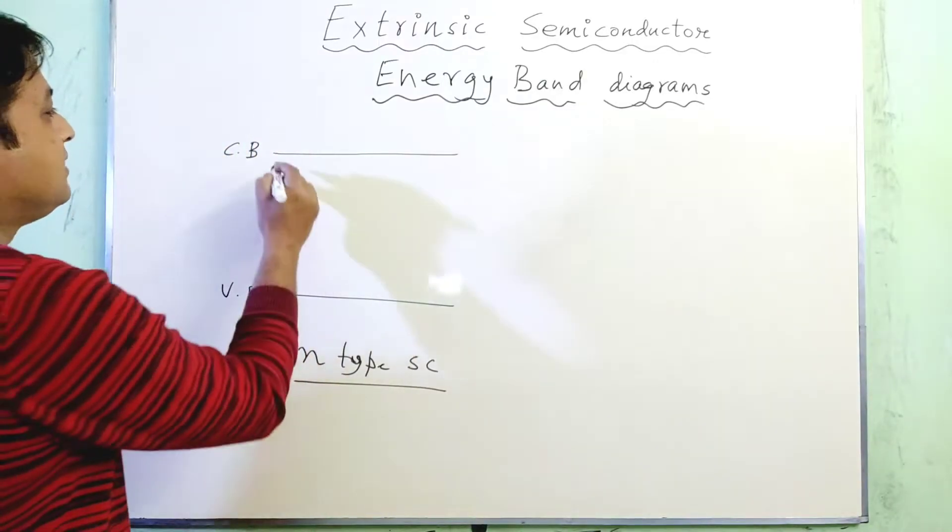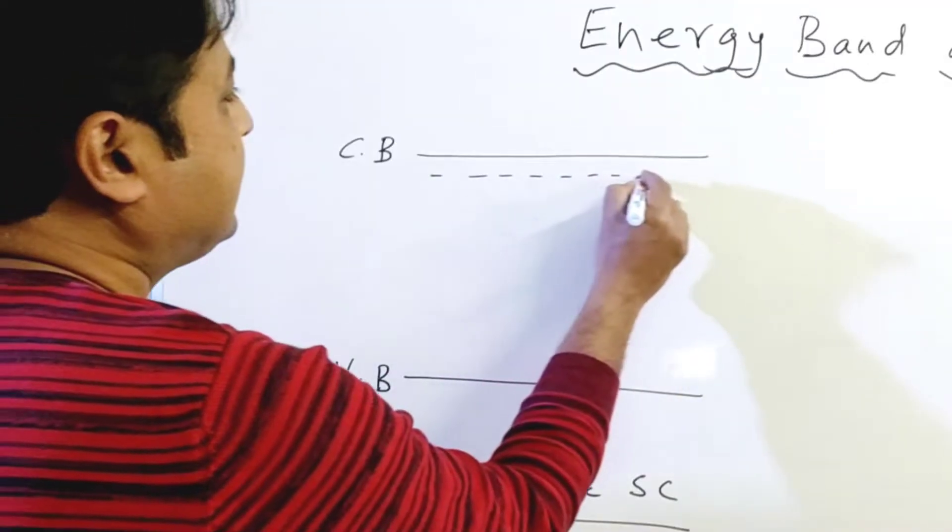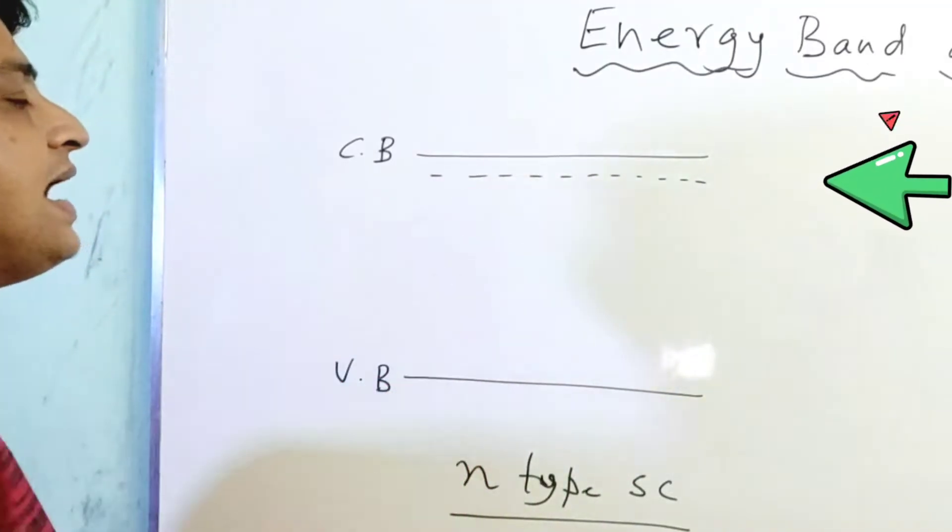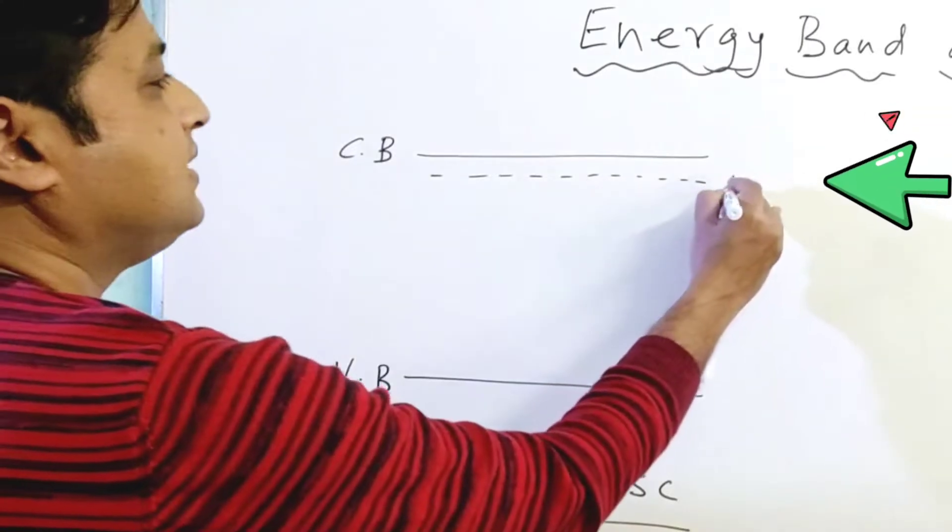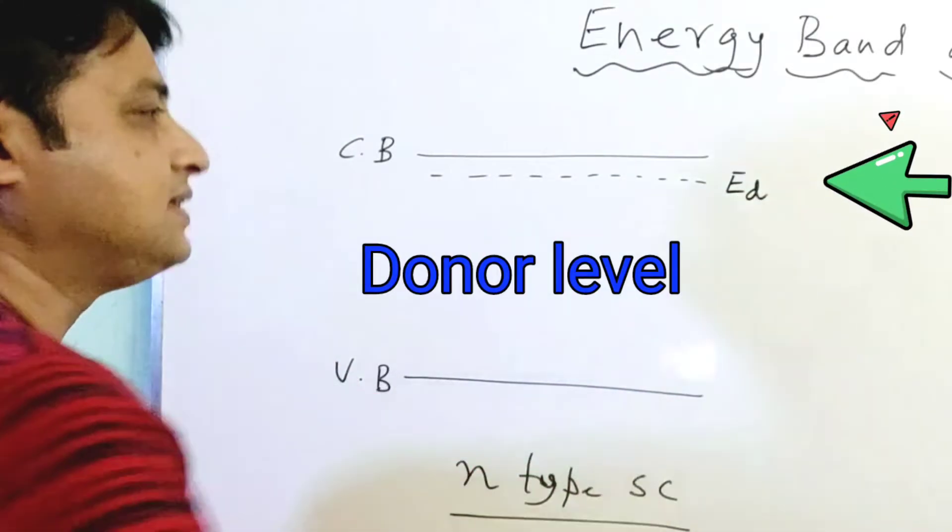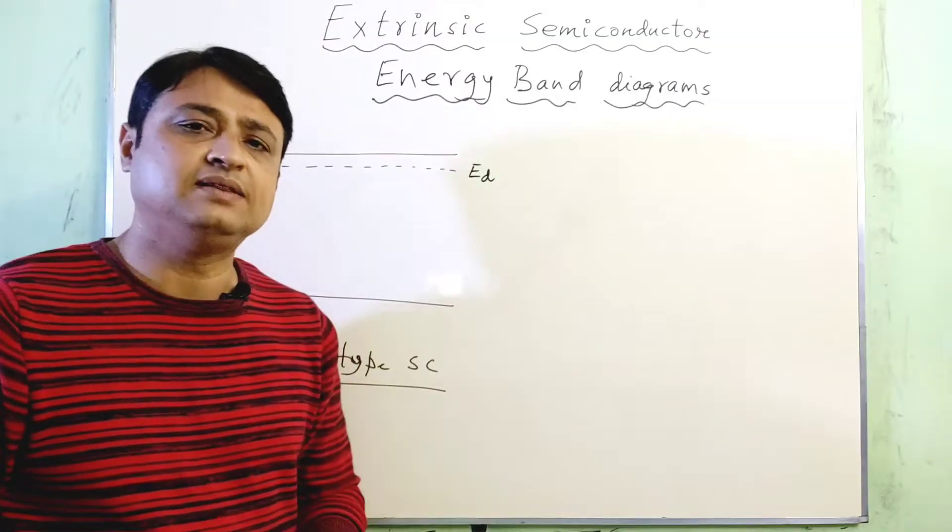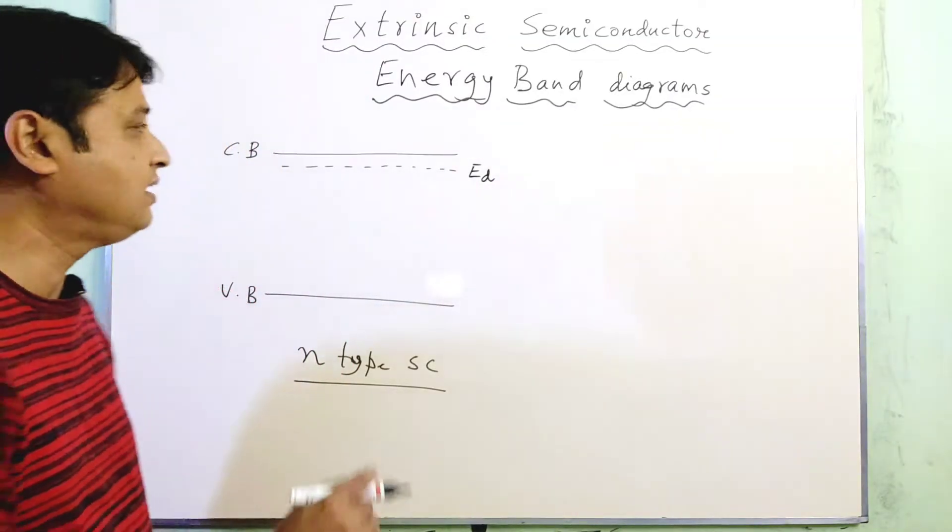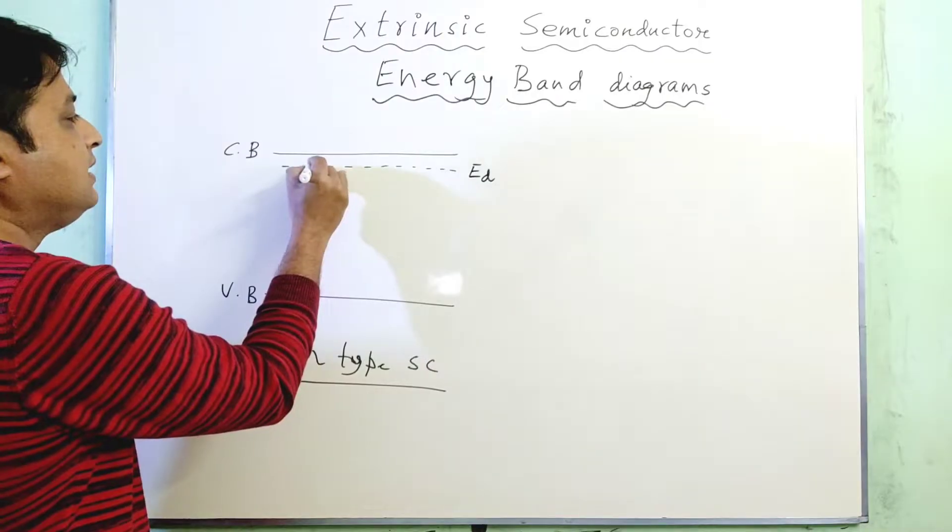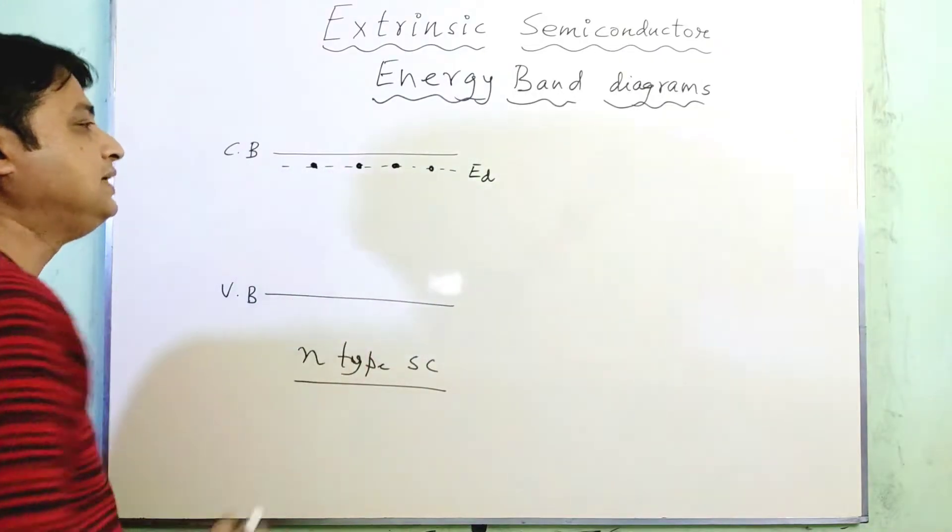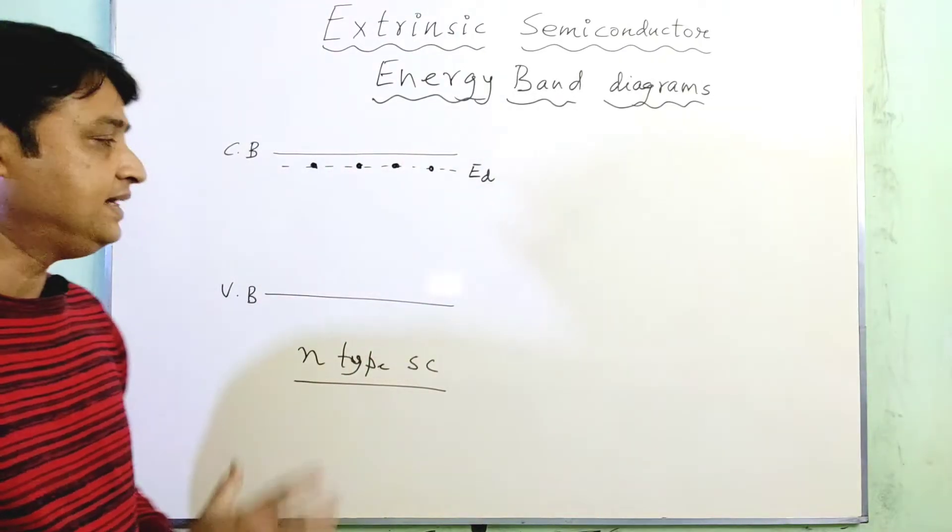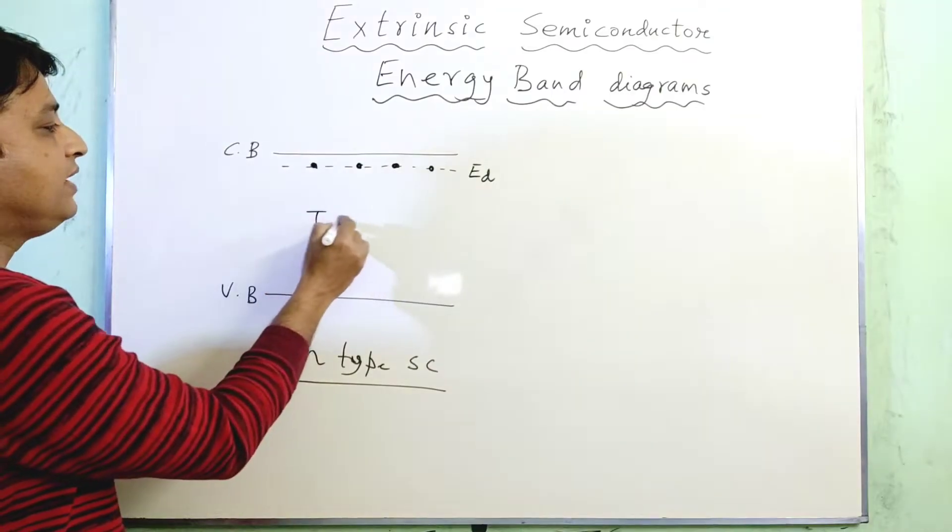That's the reason that an additional energy state is created adjacent to the conduction band, and this is the donor energy state or donor energy level. Now at 0 Kelvin, these donor energy levels will be filled with electrons. These are the electrons at T equals to 0 Kelvin in temperature.